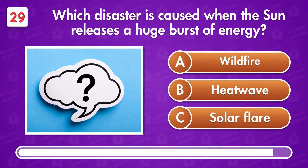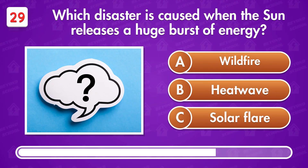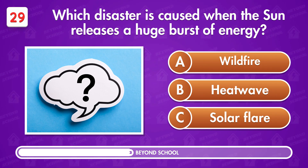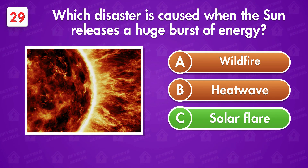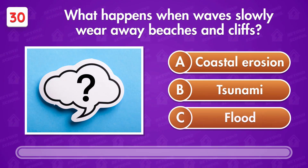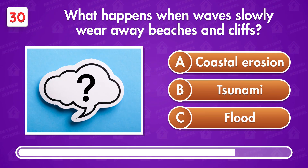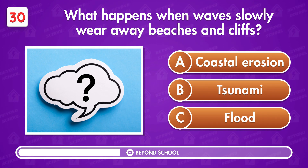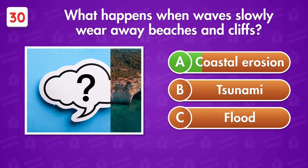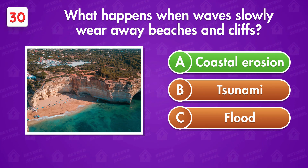Which disaster is caused when the sun releases a huge burst of energy? Solar flare. What happens when waves slowly wear away beaches and cliffs? This is coastal erosion.